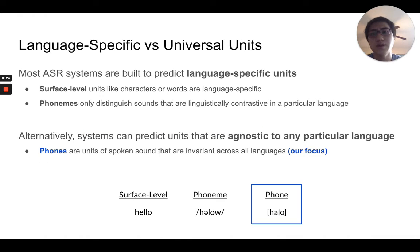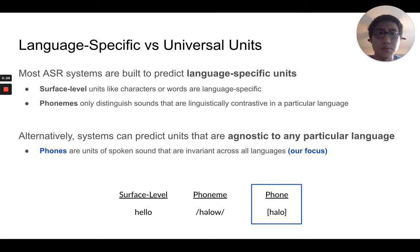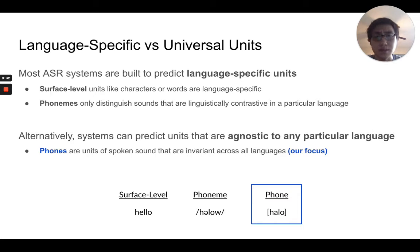Systems that are built to predict language-specific units, like surface-level or phoneme units, would fall short. Alternatively, we can build systems to predict units that are actually agnostic to any particular language.